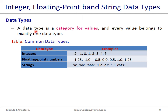A data type is a category for values, and every value belongs to exactly one data type. In Python we have three common data types: first is integer, second is floating point number, and third is string. There are examples of valid positive and negative integers, positive and negative floating point numbers, and valid strings.